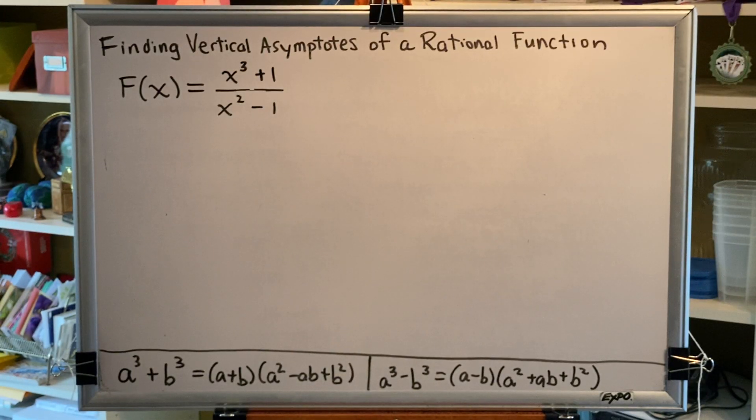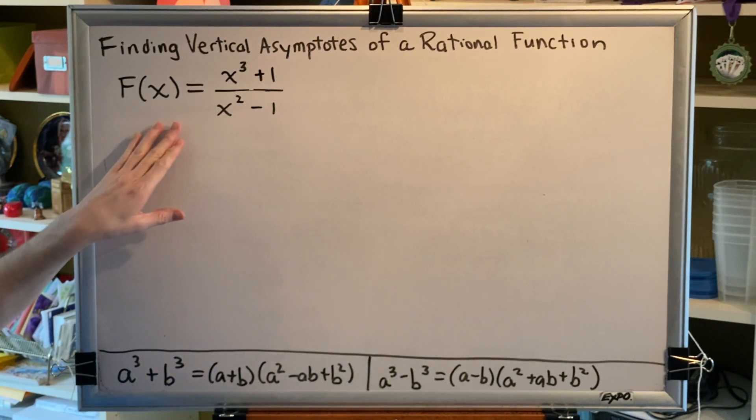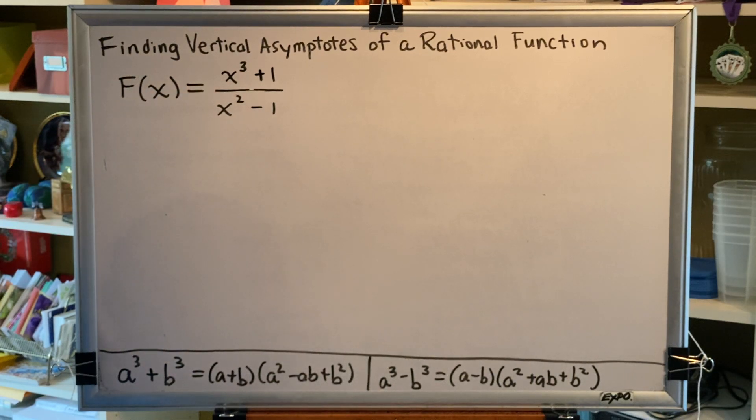The topic of this video is finding vertical asymptotes of a rational function. Let's look at a problem. Capital F of X equals the rational function whose numerator is x cubed plus 1, and whose denominator is x squared minus 1.